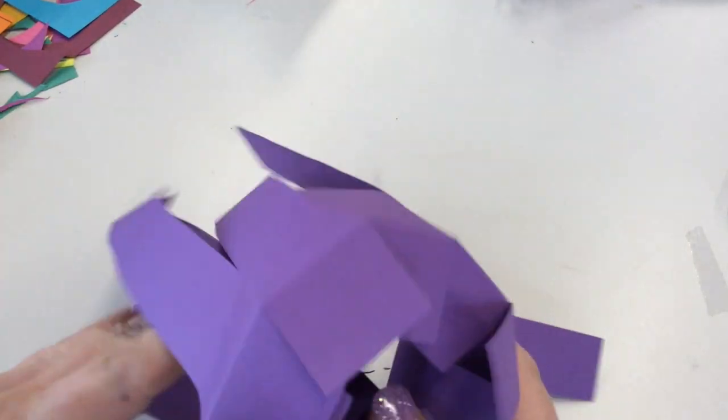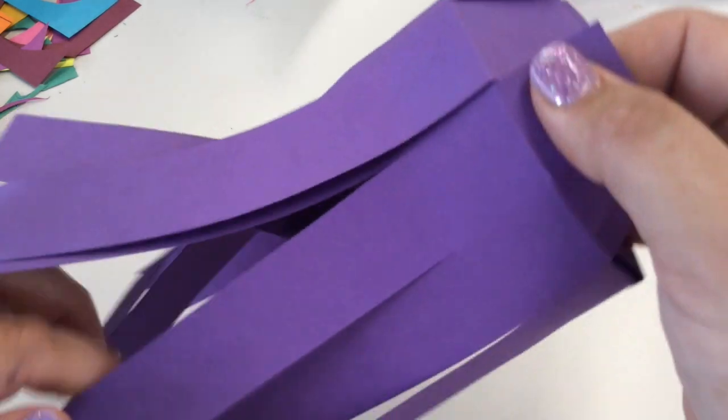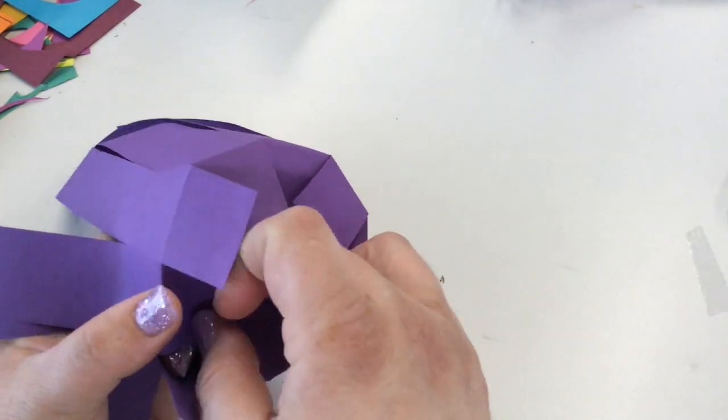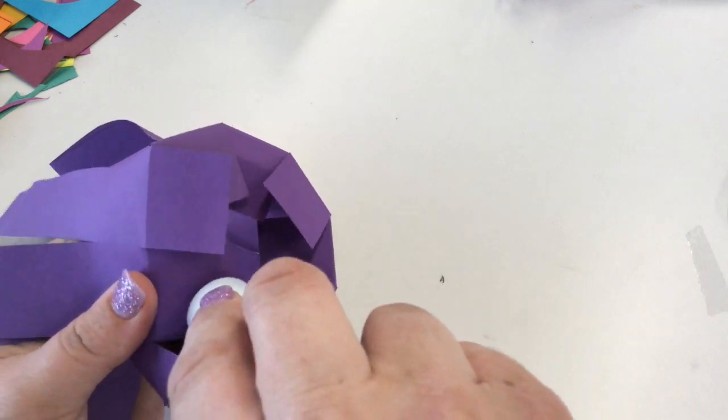This next step gets a little hairy and takes a bit of patience, but you can see how all those little tabs that you just created end up forming the bottom of the vase.